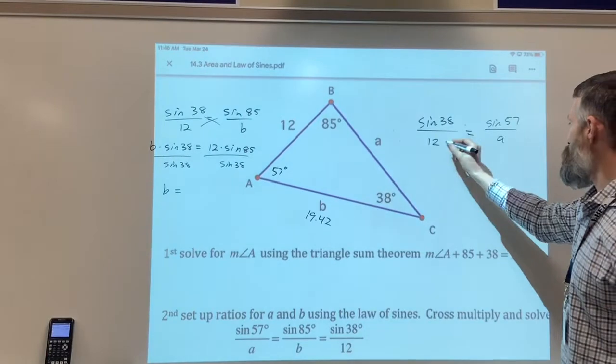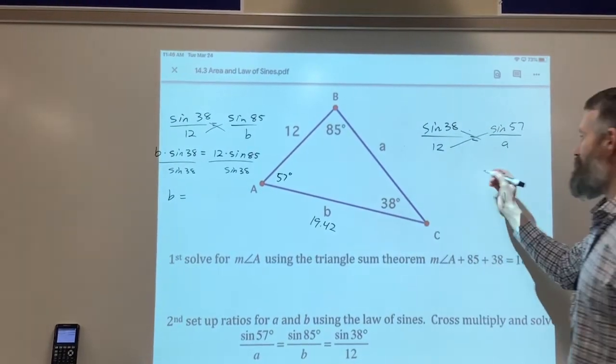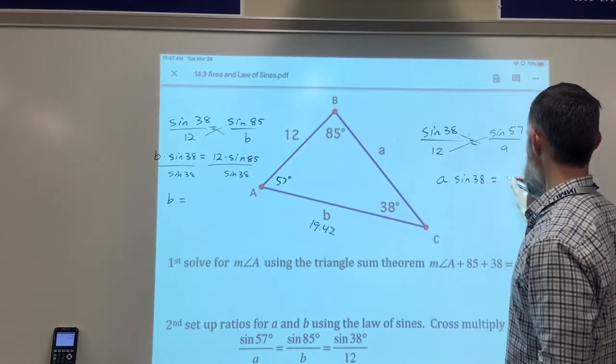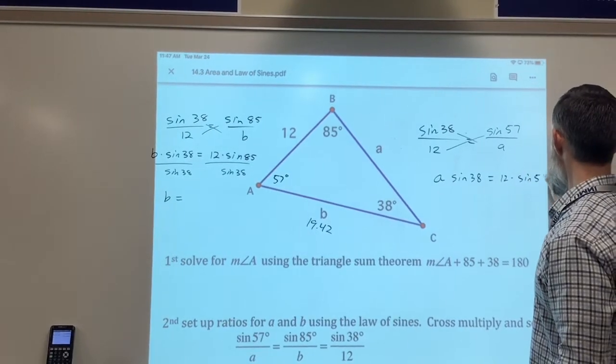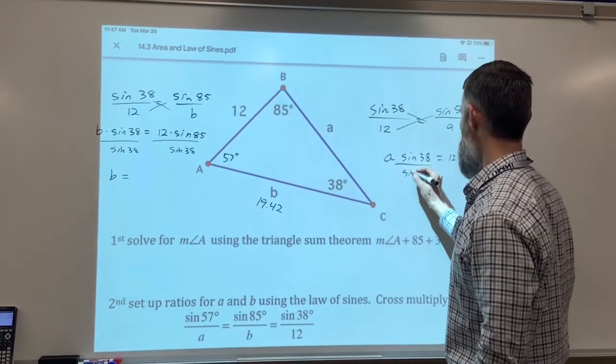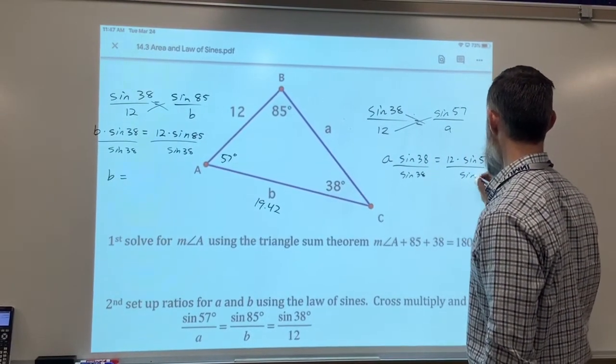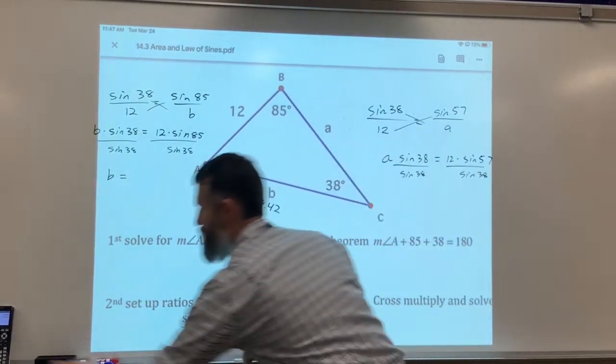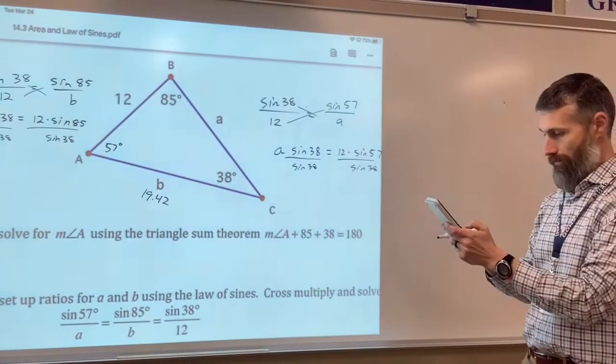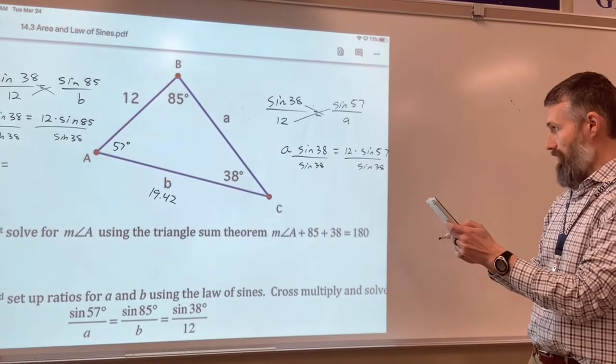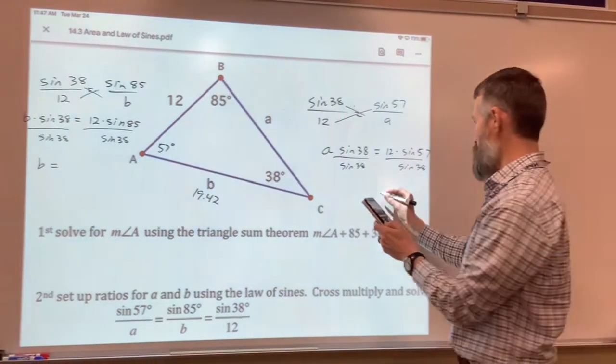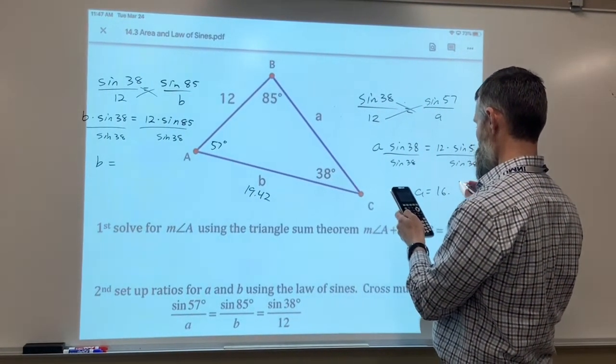And again, I'm going to cross multiply. I always like to keep my variable on the left side, so it's kind of how I work. So I'll manipulate it to make sure that's the case. So I've just cross multiplied. And I'll solve for A by dividing by sine of 38. And jump on my calculator and go to work. So I'm going to go 12 times the sine of 57, enter, and then divide by sine of 38. And I got A equals 16.35.